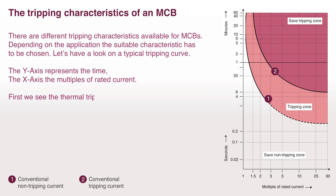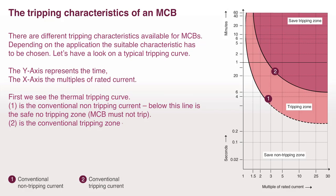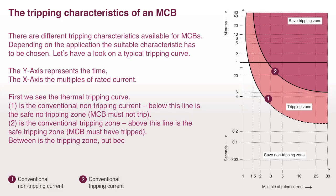First we see the thermal tripping curve. One is the conventional non-tripping current. Below this line is the safe no-tripping zone — the MCB must not trip. Two is the conventional tripping zone. Above this line is the safe tripping zone — the MCB must have tripped. Between is the tripping zone, but because of variances, it is a zone and not a fixed value.